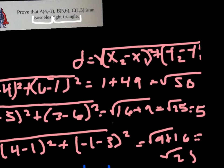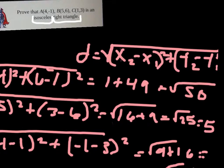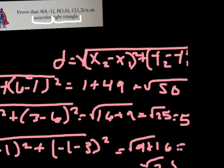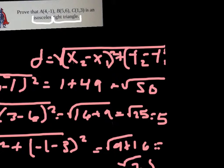The first formula we're going to use is the distance formula, which is D equals the square root of (x2 minus x1) squared plus (y2 minus y1) squared.